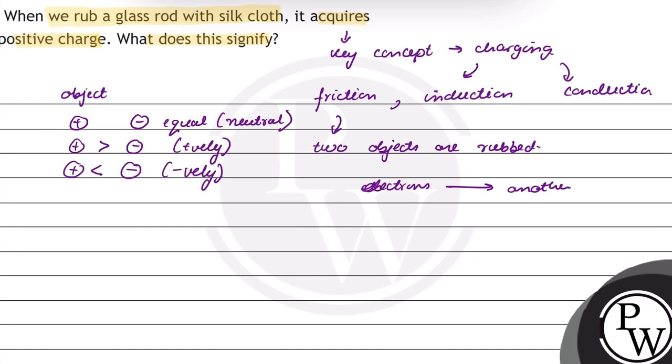When a glass rod is rubbed with a silk cloth, this transfer is charged with the help of friction. So the glass rod is charged with the help of friction.